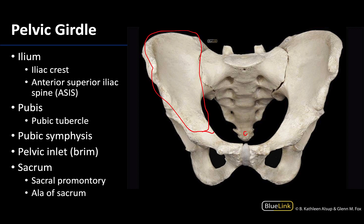We have talked about the iliac crests before. Recall placing your hands on your hips — you are resting them on your iliac crest, which is kind of the rim of the fan of the ilium. The anterior-most portion of this iliac crest is referred to as the anterior superior iliac spine, or ASIS for short, as you'll hear us refer to it quite a bit.